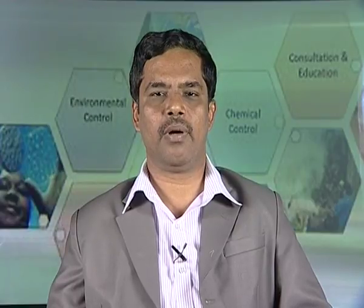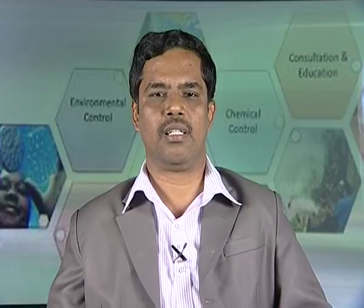For deciding this, the arbitrary limit can be fixed, such as the size of the population responsible for a 5 percent loss in yield, and this level is called the pest status. Therefore, if an insect causes a loss of less than 5 percent of yield, the infestation is negligible.